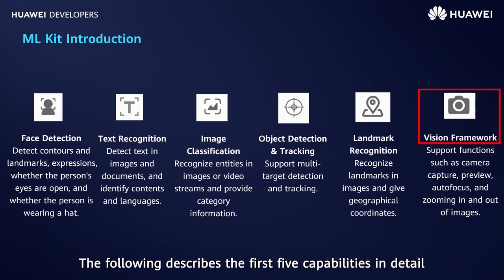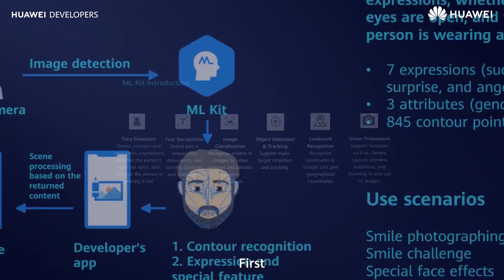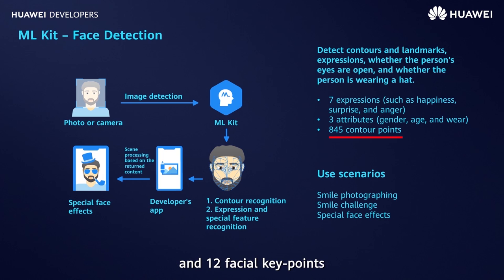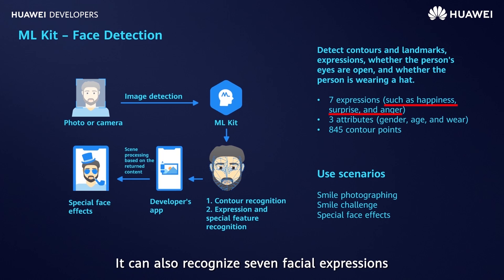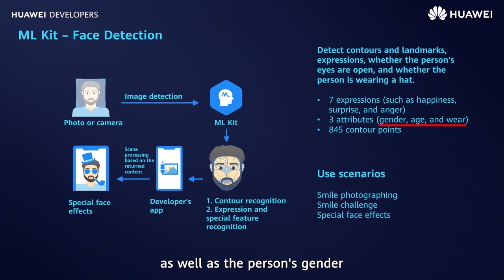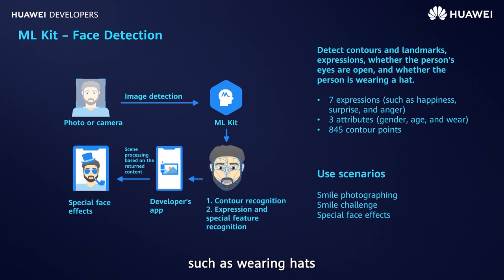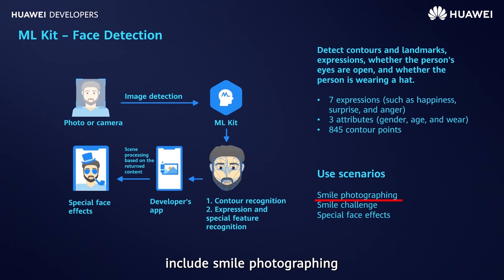The following describes the first five capabilities in detail. Face detection can detect up to 845 face contour points and 12 facial key points. It can also recognize seven facial expressions, including happiness, surprise, and anger, as well as the person's gender, age, and clothing items. After integrating this capability, you can implement your own face processing logic, such as wearing hats, covering masks, and adding facial dressing. Typical application scenarios include smile photographing, smile challenge, and other facial makeup effects.